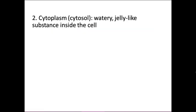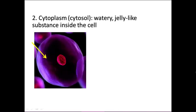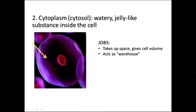The cytoplasm, sometimes referred to as the cytosol, is the watery, jelly-like substance inside the cell. It makes up the volume of the cell — without it, the cell membrane would not be pushed out. It can also act as a warehouse, storing the component atoms and small molecules that cells need to make things. It is the site of some biochemical reactions; for prokaryotic cells, it is the site of all biochemical reactions.